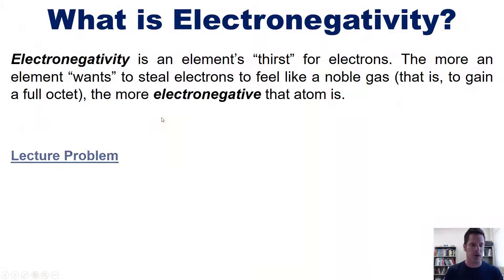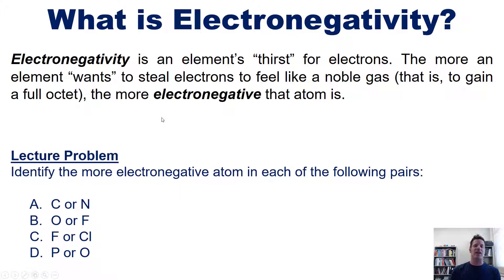We finish then with a lecture problem. I want you to identify the more electronegative atom in each of the following pairs. Now, I'm not going to show you the answer, but I'll let you try this on your own. Remember, the more electronegative atom is whichever of the two is further to the right and up on the periodic table.